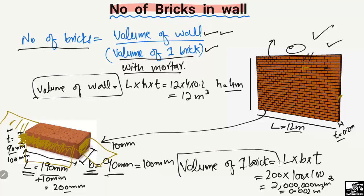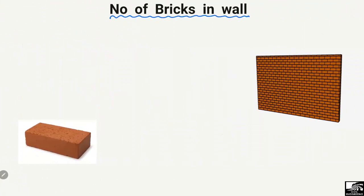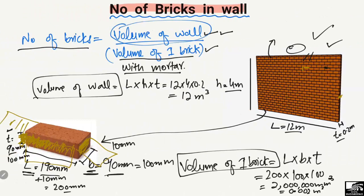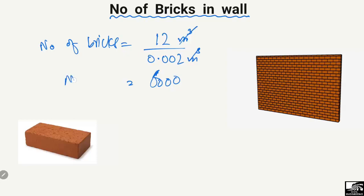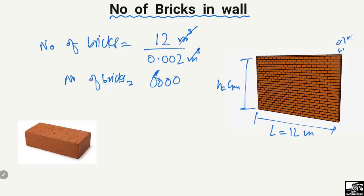Now putting values into the formula: number of bricks equals volume of wall (12 cubic meters) divided by volume of one brick with mortar (0.002 cubic meters). The units cancel out and we get 6,000 bricks. So this wall — height 4 m, length 12 m, thickness 0.2 m — requires 6,000 bricks.